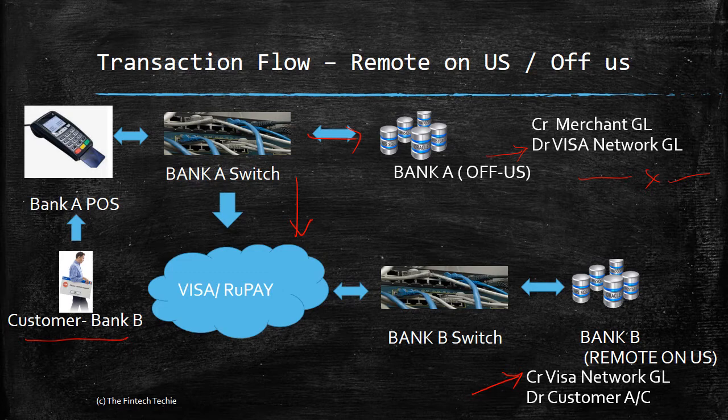To summarize the two scenarios: the first is an on-us transaction where both issuer and acquirer are the same bank. The second is an off-us or remote on-us — off-us from Bank A's perspective, and remote on-us from Bank B's perspective.